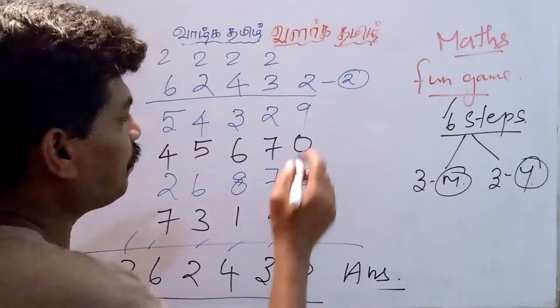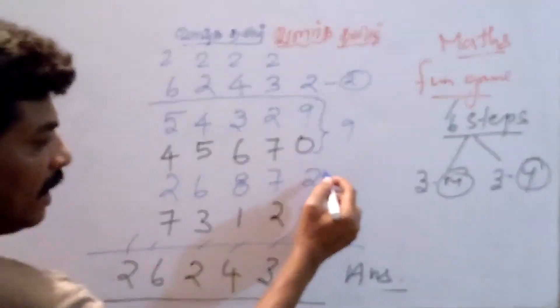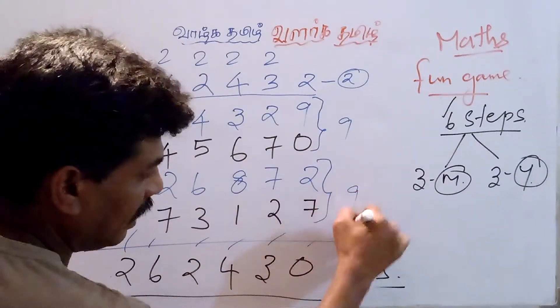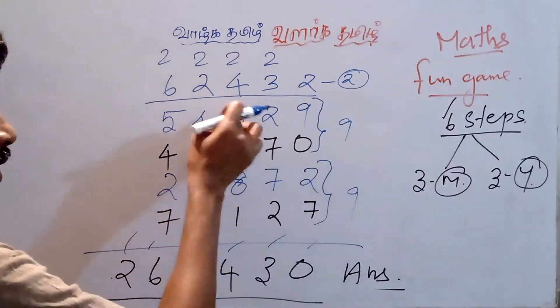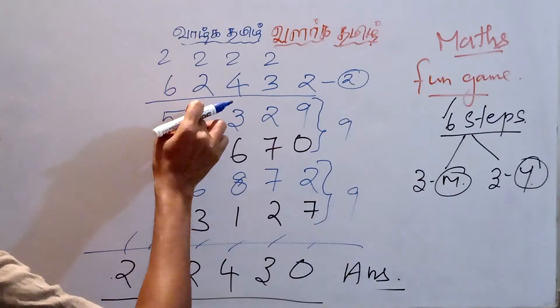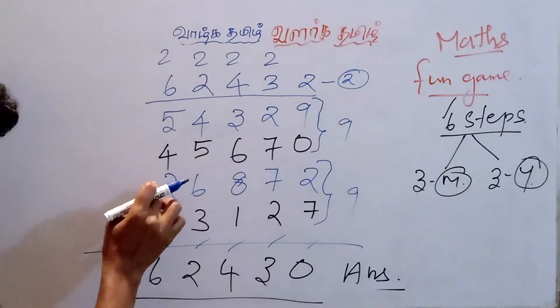And second step, just you have to see. Both are 9. 9 plus 0 is 9, 2 plus 7 is 9, 3 plus 6 is 9, 4 plus 5 is 9, 5 plus 4 is 9.